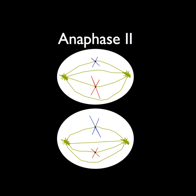Now begins metaphase 2, in which one side of each chromosome is pulled to the opposite sides of the cell by the spindle fibers. The cell membrane begins to stretch.